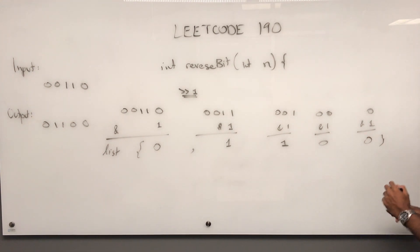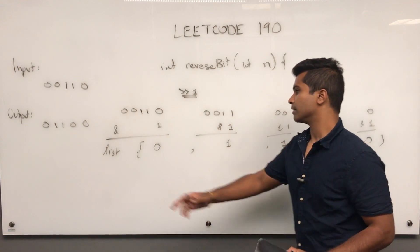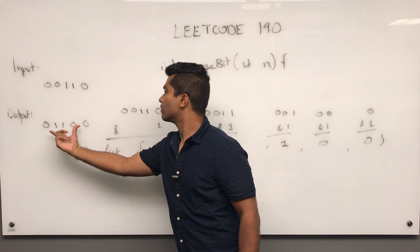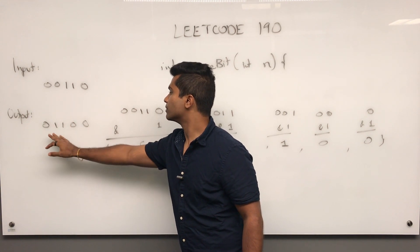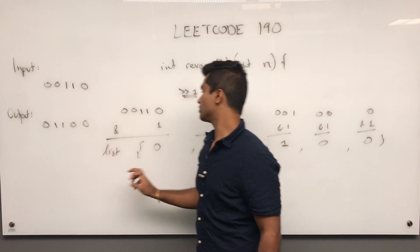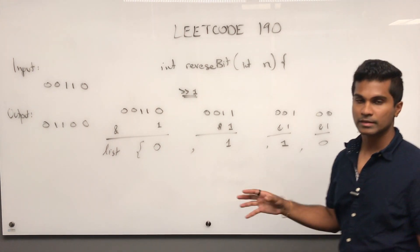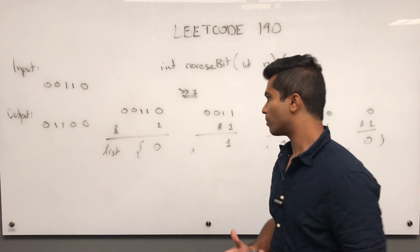Now if you look, my list is the same output that I want. Initially this was the input. When it's flipped around, it looks like 0, 1, 1, 0, 0. Now I'm going to use this list to rebuild the desired output.